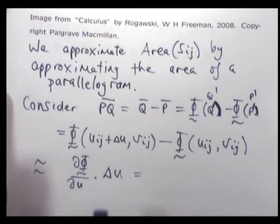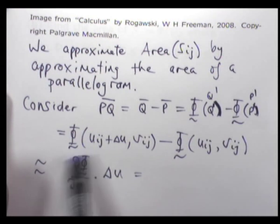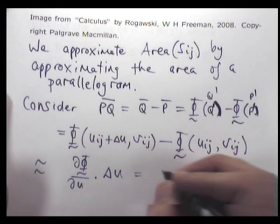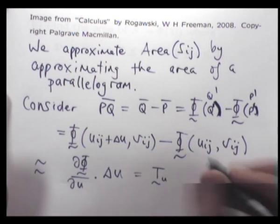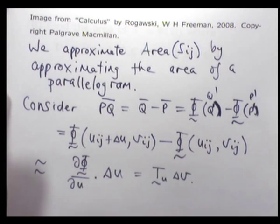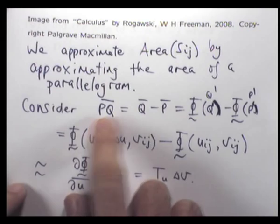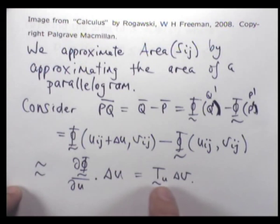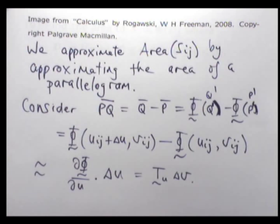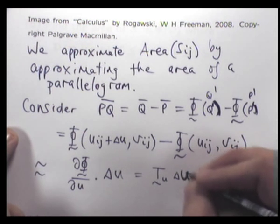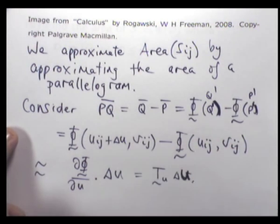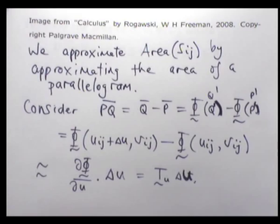If you remember back to how we defined our tangent vectors T_U and T_V, we end up with the approximation: the vector PQ is just the tangent vector T_U times delta-U.